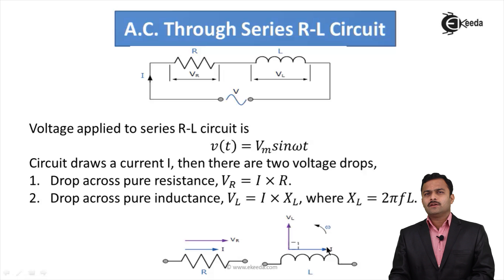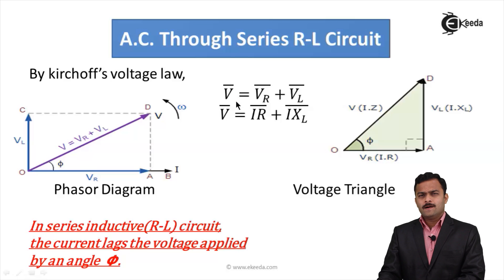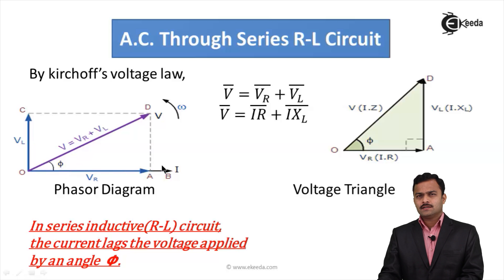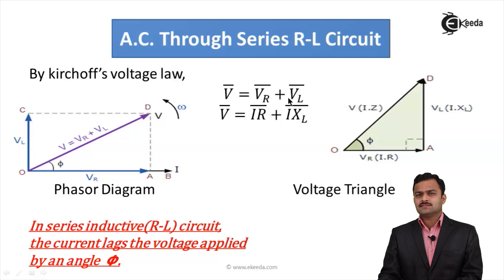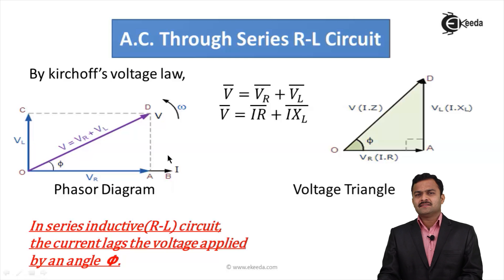Adding these two voltages gives the supply voltage. By Kirchhoff's Voltage Law: V̄ = V̄R + V̄L. Voltage and current are vectors with both magnitude and phase angle. In a series circuit, taking current as reference (along the positive x-axis), VR is in phase with current I. VL leads current by 90 degrees. The vector addition of VR and VL gives the applied voltage V.